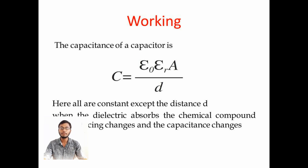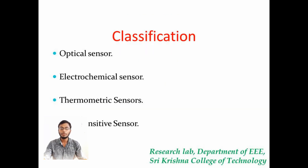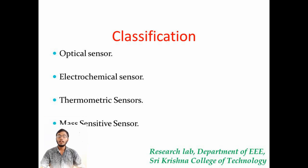There are different types of chemical sensors. They are optical, electrochemical, electrical, mass sensitive, magnetic, thermometric and other radiating detectors.